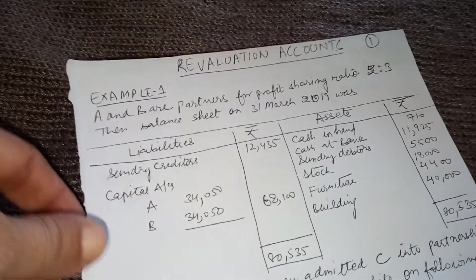Always calculate the new profit sharing ratio first, then prepare the revaluation account. A brings 20,000 as capital and 6,600 as goodwill — no effect on revaluation. The reserve for doubtful debt = 2% on debtors of 27,500 = 550. Stock is to be written down by 5%: stock is 14,100 × 5% = 705 approximately 750.